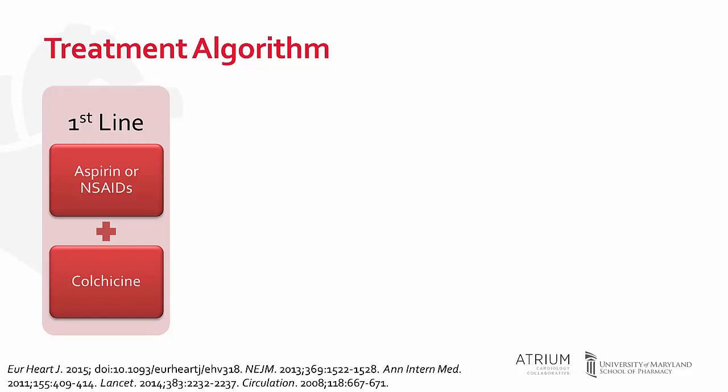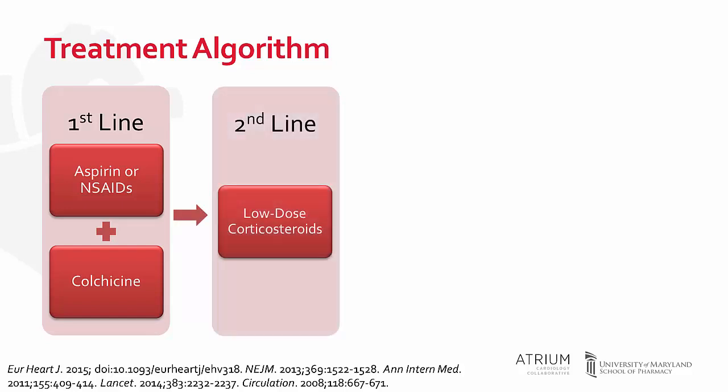Gastrointestinal protection with, for example, a proton pump inhibitor, is reasonable for the duration of therapy. Most patients should be able to be successfully treated with first-line agents. However, in patients with contraindications to aspirin or NSAIDs, they may receive low-dose corticosteroids in combination with colchicine. Additionally, in patients who fail combination therapy, low-dose corticosteroids may be added on for triple therapy.